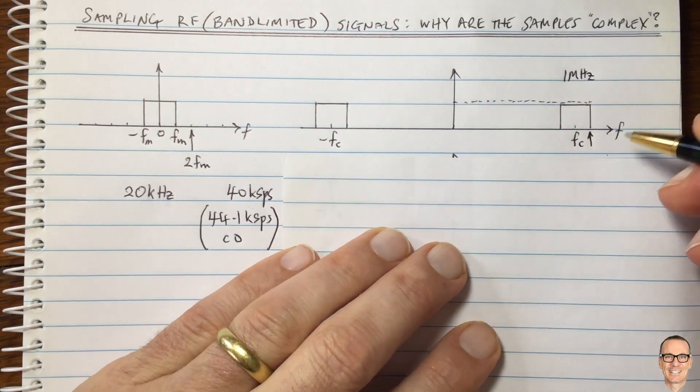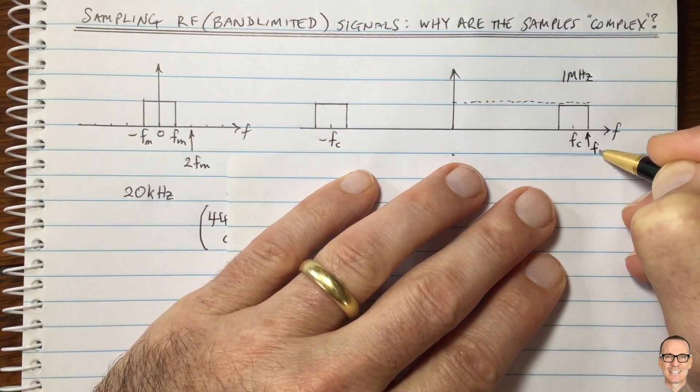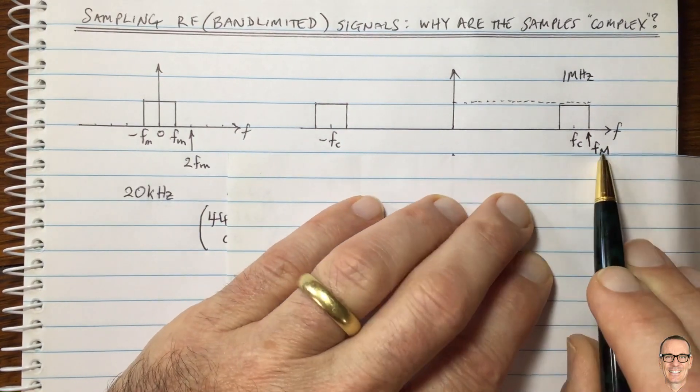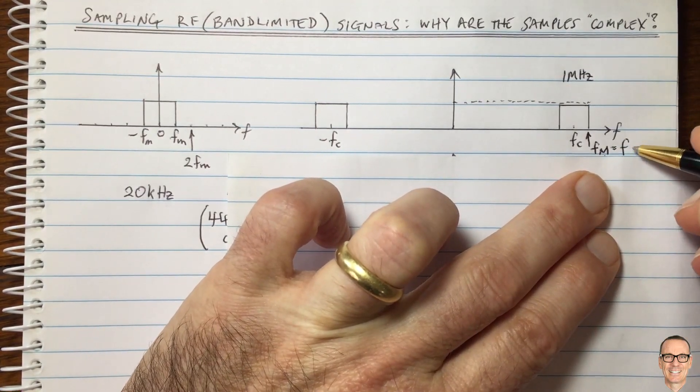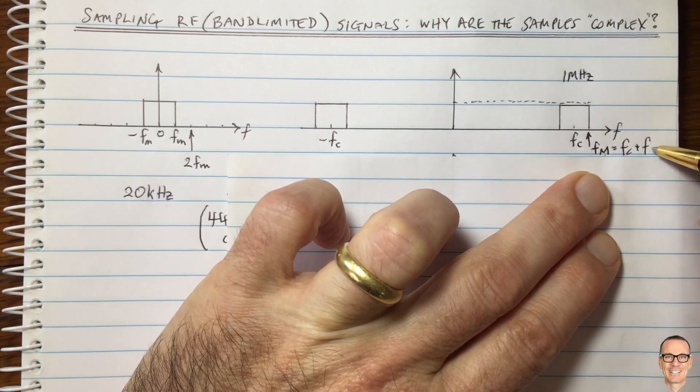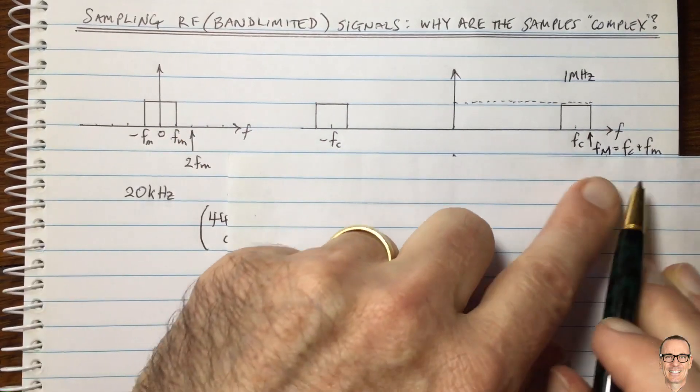Because it's the maximum frequency of the modulated waveform now is F capital M. And of course, this equals the carrier frequency plus the original FM from the baseband signal.